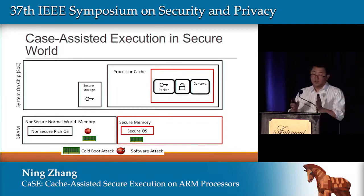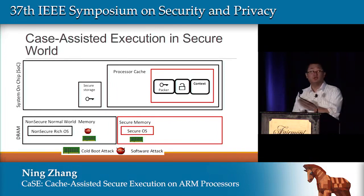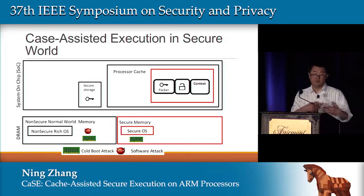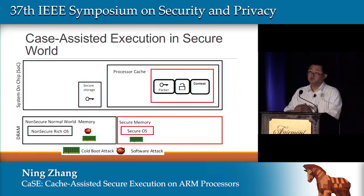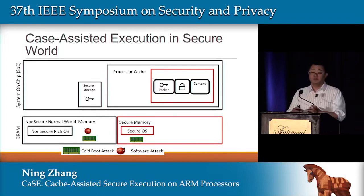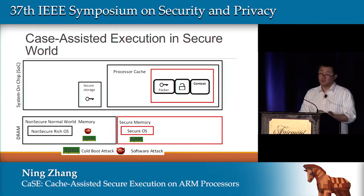When there is a task switch in the operating system — for example, when we need to start playing MP3 music — it's not necessary to erase the entire cache contents. We can just leave them in the secure cache, because the inherent protection of TrustZone means that as long as cache lines are marked as secure, the compromised normal-world rich OS cannot touch them.